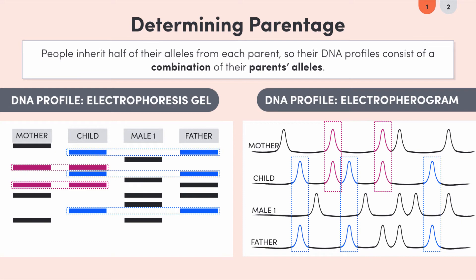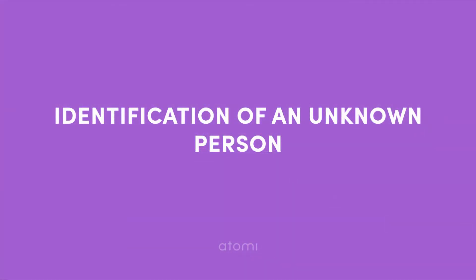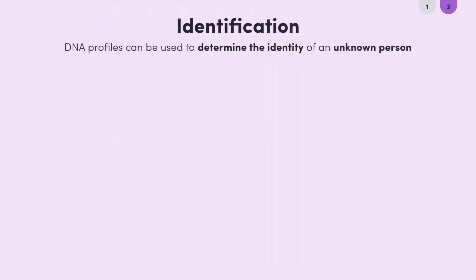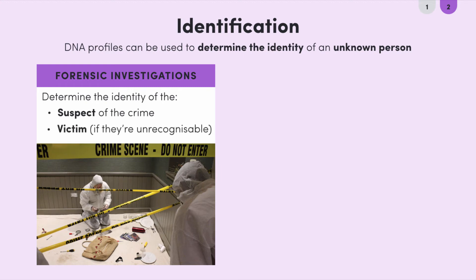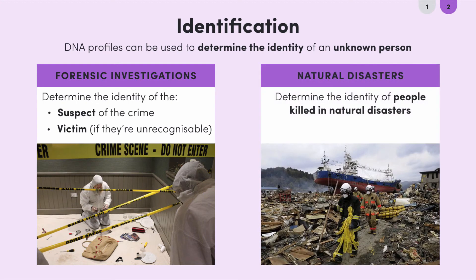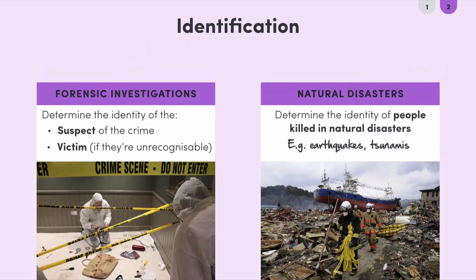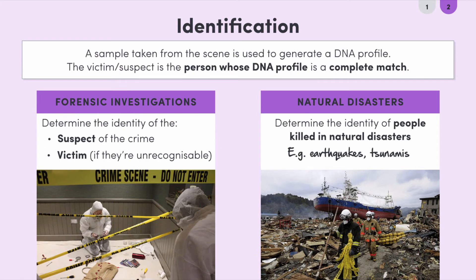In summary, people inherit some of their alleles from each parent, so their DNA profiles consist of a combination of their parents' alleles. Another application of DNA profiling is identifying an unknown person — most commonly in forensic investigations to determine the identity of a suspect or an unrecognizable victim, or to identify bodies of people killed in natural disasters such as earthquakes and tsunamis. In both cases, a sample taken from a scene can be used to generate a DNA profile.